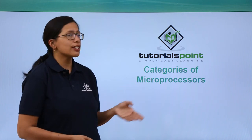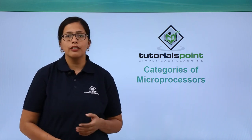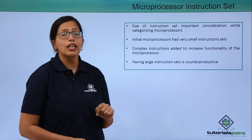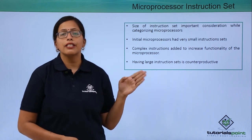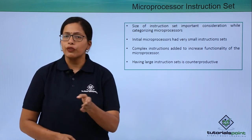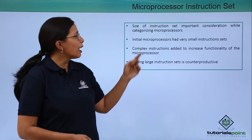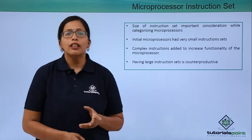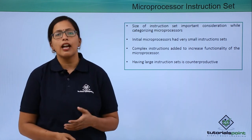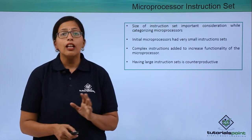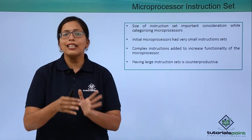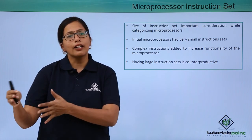In this video, we are going to discuss the categories of microprocessors based on their instruction set. The size of the instruction set is an important consideration while categorizing microprocessors because that decides the performance of the microprocessor. Initial microprocessors had very small instruction sets. As we discussed in the previous video, the first microprocessor had just 45 instructions, but as new and complex software was introduced, the basic instruction size started increasing.